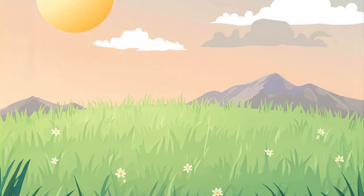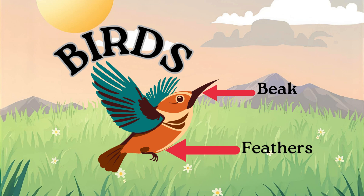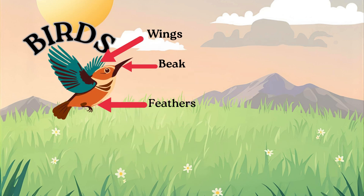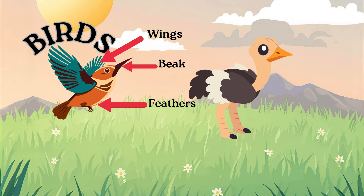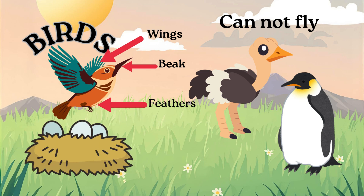Next are birds. Birds have feathers, beaks, and two wings. Most birds can fly, but some like ostriches and penguins cannot. Birds lay eggs, and many build nests to keep them safe.